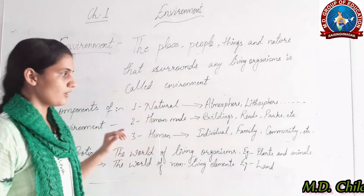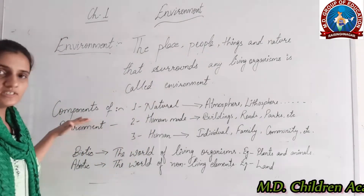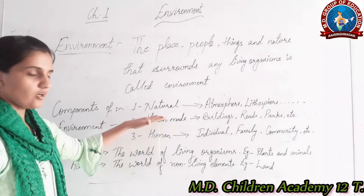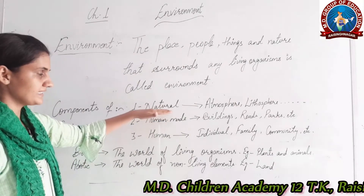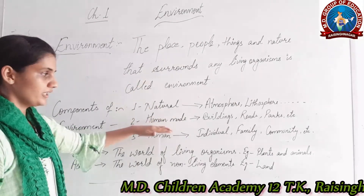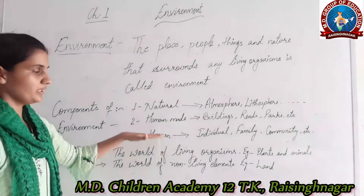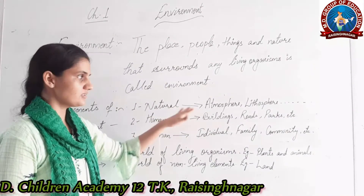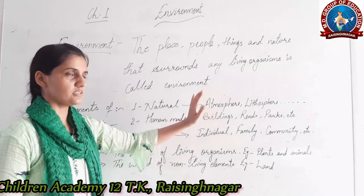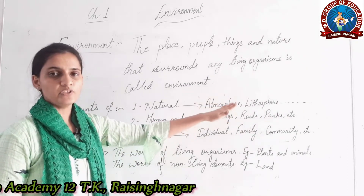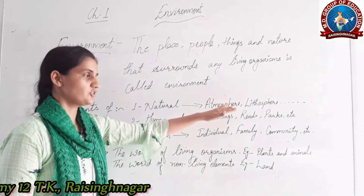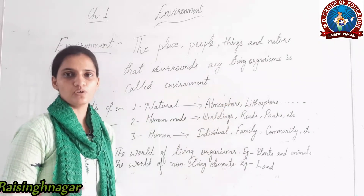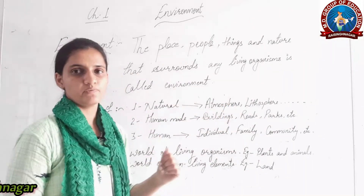Coming to the next topic — components of environment. There are basically three components of environment: natural, human-made, and human environment. Natural environment comprises all things that naturally occur, such as atmosphere, lithosphere, hydrosphere, and biosphere.